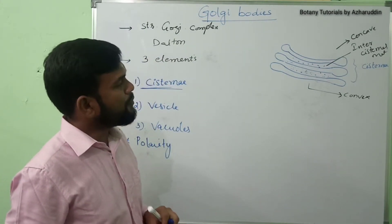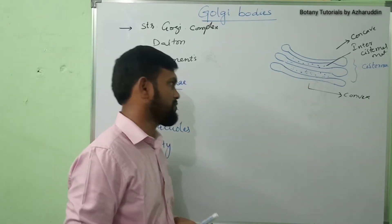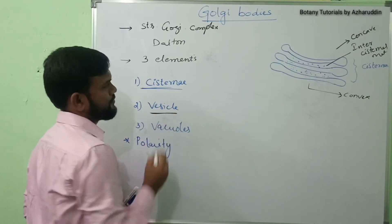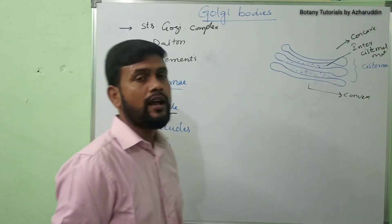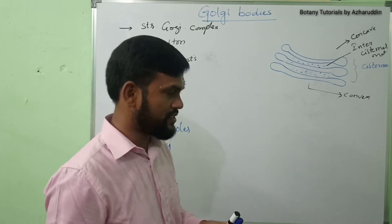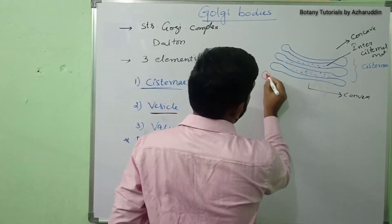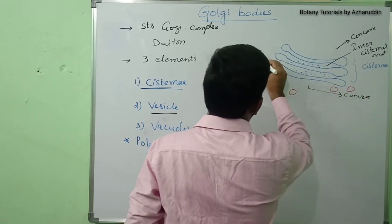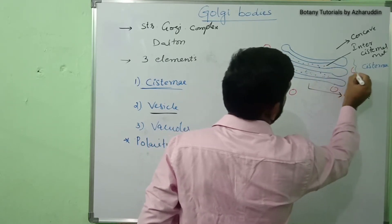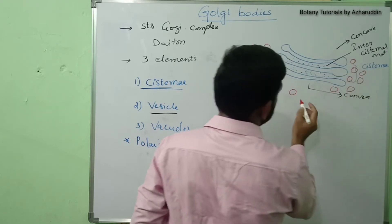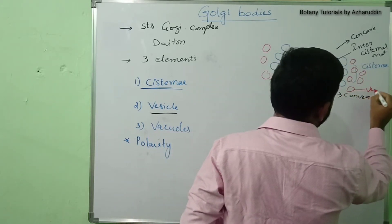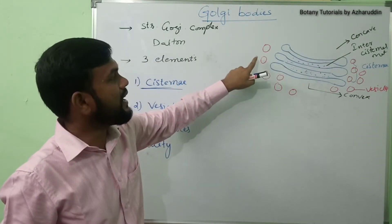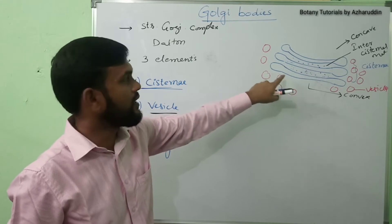The diameter of the cisternae is generally about 20 to 30 angstroms. Next, coming to vesicles — vesicles are small spherical structures. They are generally present at the ends of the cisternae.